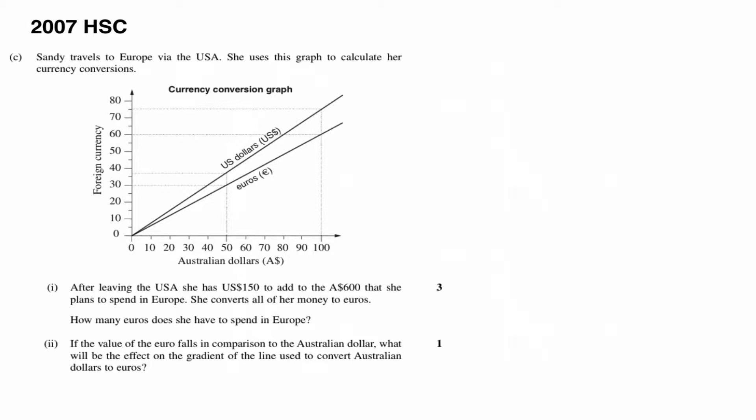After leaving the USA, she has $150 US dollars to add to the Australian $600 that she plans to spend in Europe. She converts all her money to Euros. How many Euros does she have to spend in Europe? Well, the first thing we need to do is we need to convert the US dollars to Australian dollars and then work out how many Australian dollars she has in total and convert those to Euro.